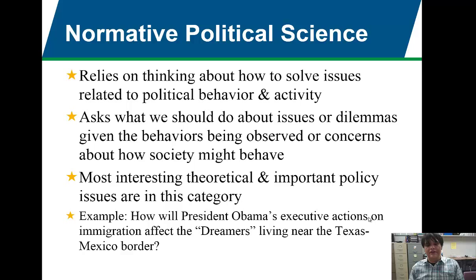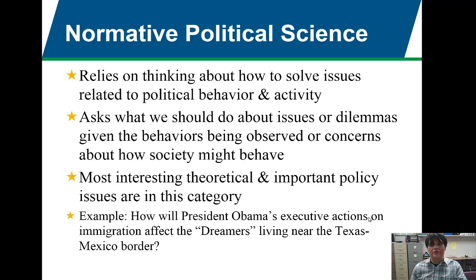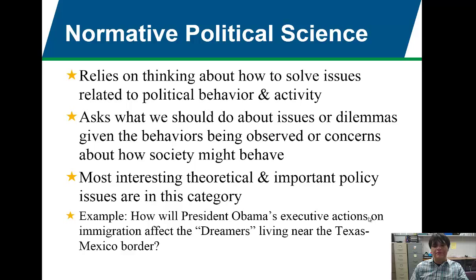On the flip side, the key thing to know about normative political science is that it relies on thinking about how to solve issues related to political behavior and activity. Normative political science asks what we should do about issues or dilemmas given the behaviors observed or concerns about how society might behave. It's much more forward-thinking and takes into consideration values and beliefs behind issues rather than just the facts. It takes a more moral and value-based approach. Most of the interesting theoretical and important policy issues are in this category.